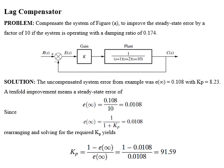In the given example, we have to improve the steady-state error by a factor of 10 if the system is operating with a damping ratio of 0.174. The system is similar to the example of the PI controller. From G(s), the system is of type 0 and for step input it will have a finite steady-state error. From the last example, the system operating at a damping ratio of 0.174 has a steady-state error of 0.108 and a static error position constant of 8.23.